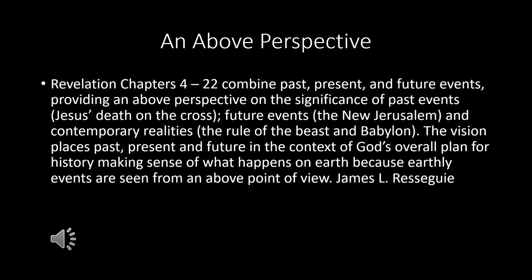Let's talk about chapter 4 before we jump into it. A trumpet-like voice commands John to come up to heaven and see what must take place after this. Revelation chapters 4 through 22 combine past, present, and future events, providing an above perspective on the significance of past events — Jesus' death on the cross — future events like the new Jerusalem, and contemporary realities like the rule of the beast and Babylon. The vision places all of these in the context of God's overall plan for history.